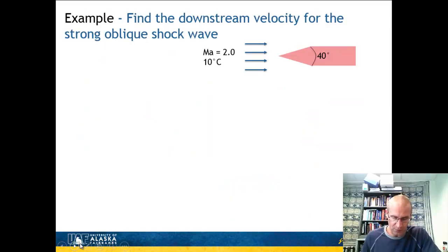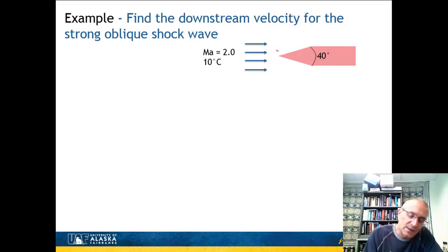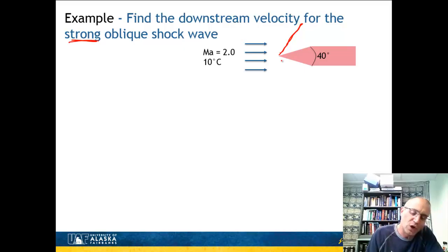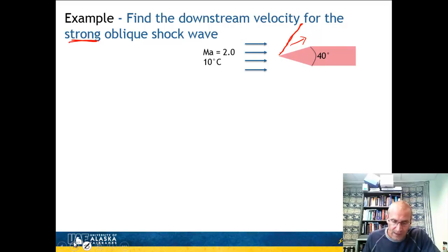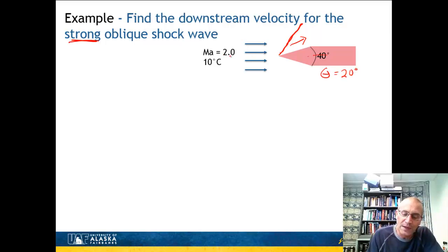Example: A rocket nose has a total angle of 40 degrees and is flying at Mach 2, with atmospheric temperature of 10°C. We want the downstream velocity for the strong shock wave. First, find the half angle (turning angle): delta = theta = 20 degrees. Then go to the theta-beta-Mach diagram at 20 degrees and Mach 2, reading the strong shock side — beta is approximately 74 degrees.